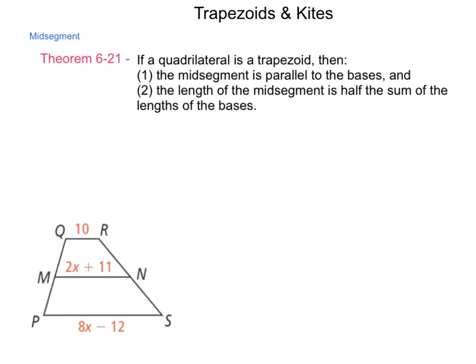The first part — the midsegment is parallel to the bases — is the same as with a triangle. If we were to complete this and make it a triangle, the midsegment connecting the midpoints of the two sides was parallel to the one base. Here we have two bases, so it's parallel to each of them.